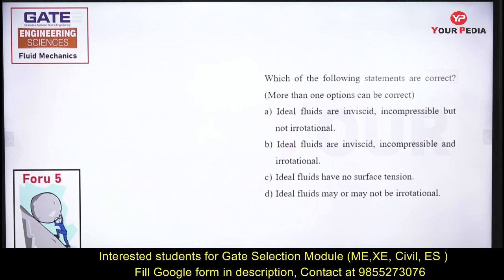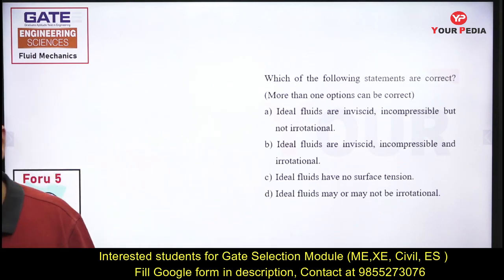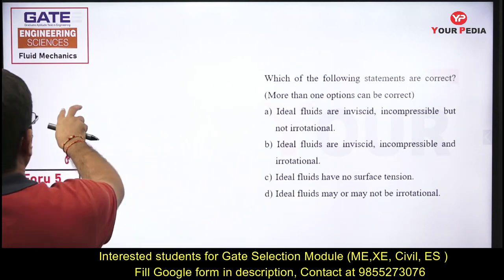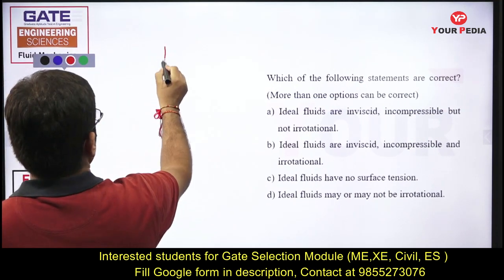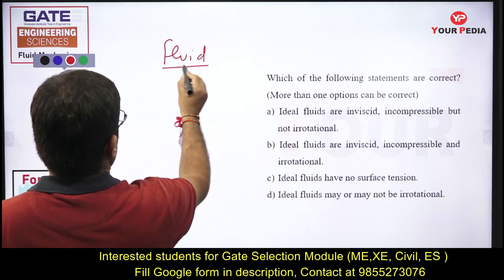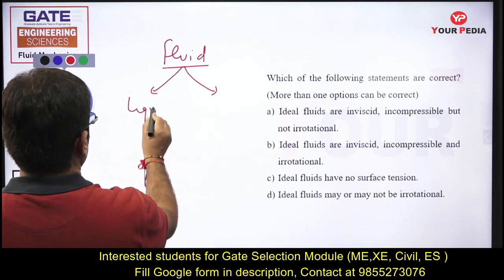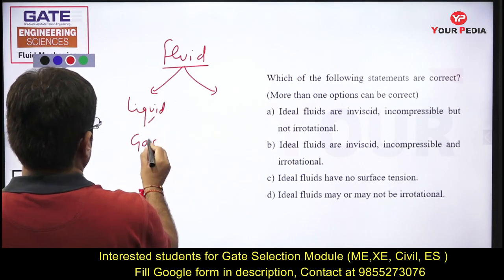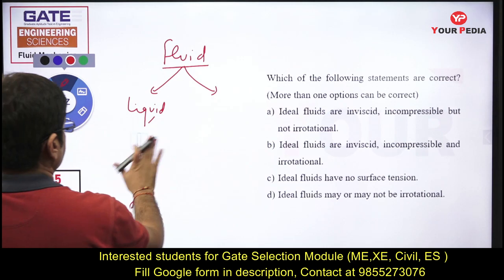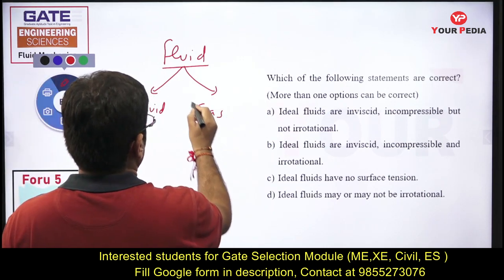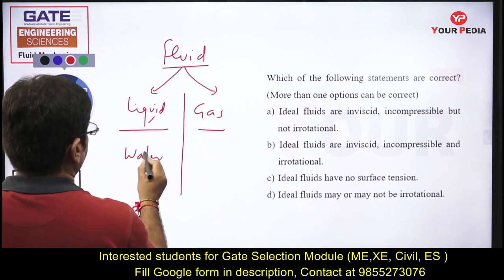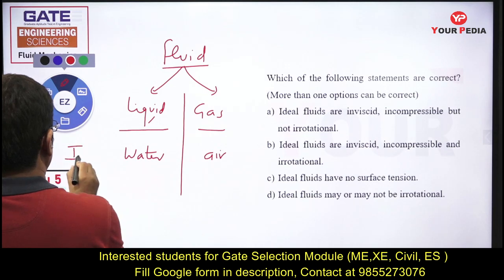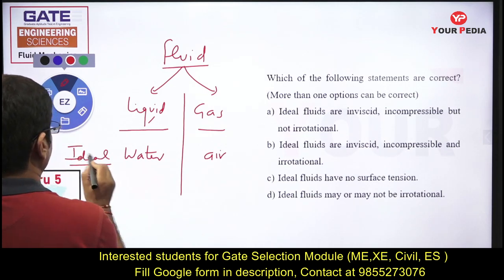Next question is related to ideal fluids. Fluid means liquid and gas. Water and air are considered ideal fluids under certain conditions. The first condition is that the fluid must be inviscid. In liquids, viscosity arises from intermolecular attraction; in gases, from intermolecular collision.